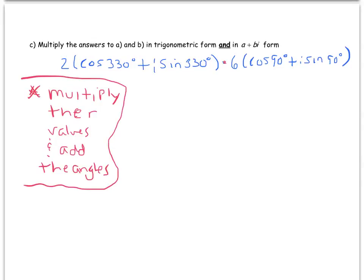That's why it's nice and convenient. What are our R values? Well 2 and 6, so 2 times 6 gives you 12. And then we add up our angles, 330 plus 90 is just 420. So it's 12 times cosine of 420 degrees plus i sine 420 degrees. Done.